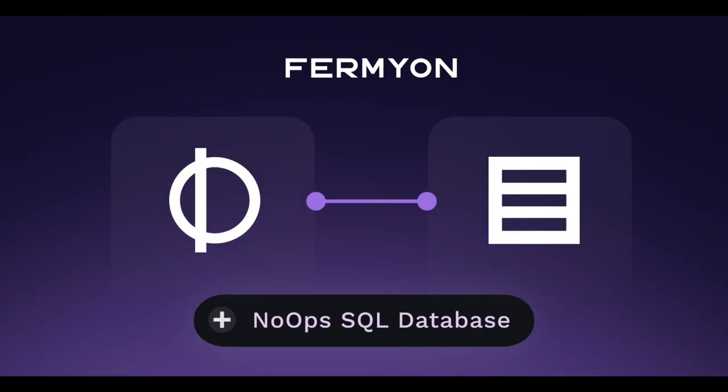So we said, let's give it a shot. Let's start with key value storage and see if we can build an offering where you have key value storage that's just automatically available locally — no connection string, no setup, no username and password, no permissions to configure. It's just automatically available as part of the Spin environment. And then when you deploy to Fermion Cloud, we'll stand up a cloud version of that — far more robust, far more powerful — but something that matches one-to-one with the local experience. You don't have to handle the day-two operations either; we just take care of all of that for you.